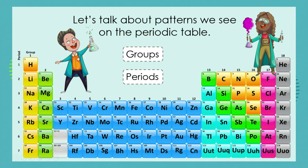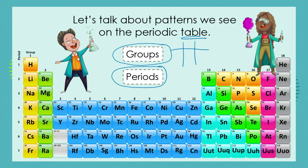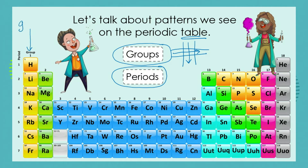Let's begin. Let's talk about the patterns we see on the periodic table. Do you remember that we said the elements are organized into groups and into periods? Now remember, it's a table, and tables have columns and rows. So which of them are columns and which are rows? You should remember that your groups are in fact the columns.